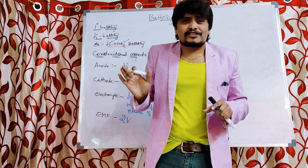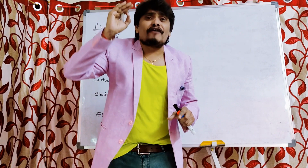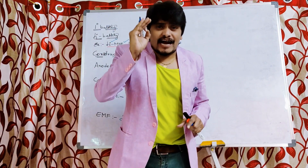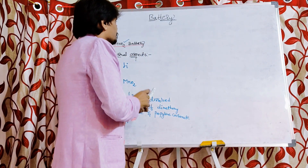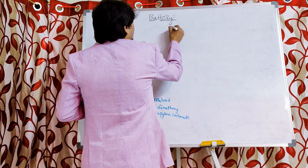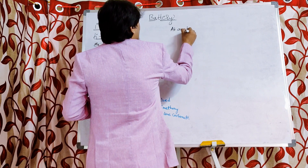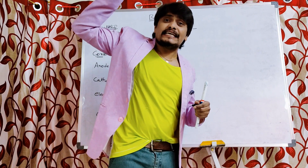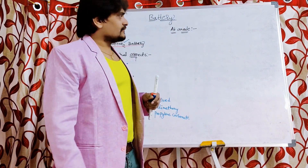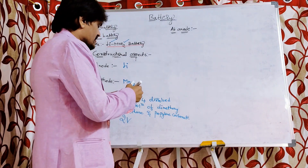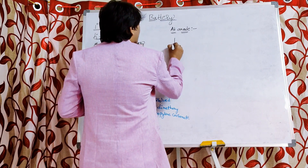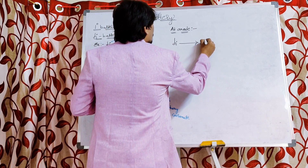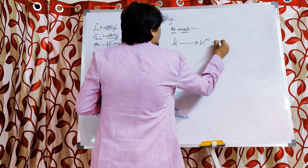We have ended the constructional aspects and discussed the EMF. According to the protocol, next — when the current is drawn from the battery — we look at the reaction at the anode and the reaction at the cathode. Whenever current is drawn, the following reaction occurs at the anode: lithium is acting as the anode, so it undergoes oxidation, producing Li⁺ ions and losing one electron.